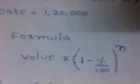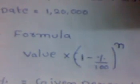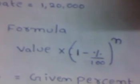Here, the value is the value of the asset on which we need to apply depreciation. Percentage is the percentage which we need to apply on the asset, and n equals the number of years for which we need to apply depreciation.